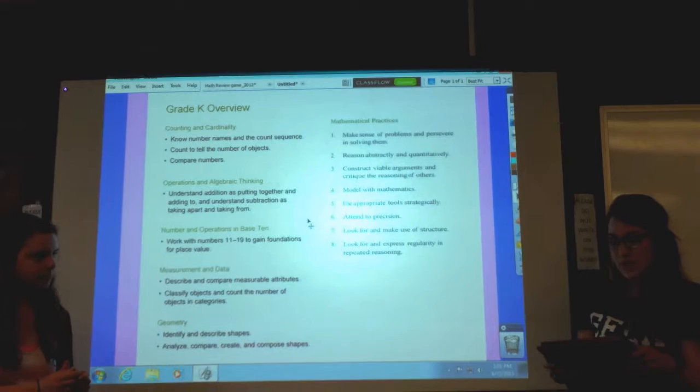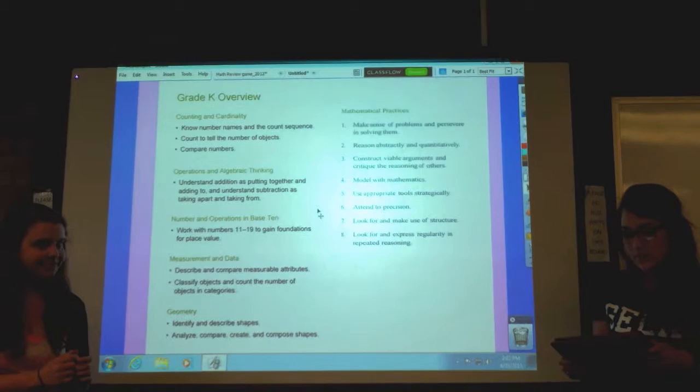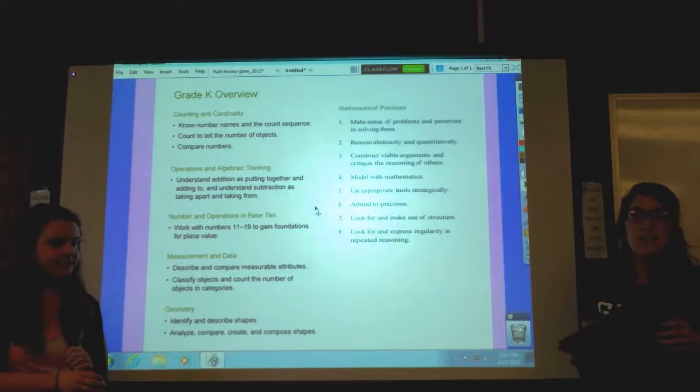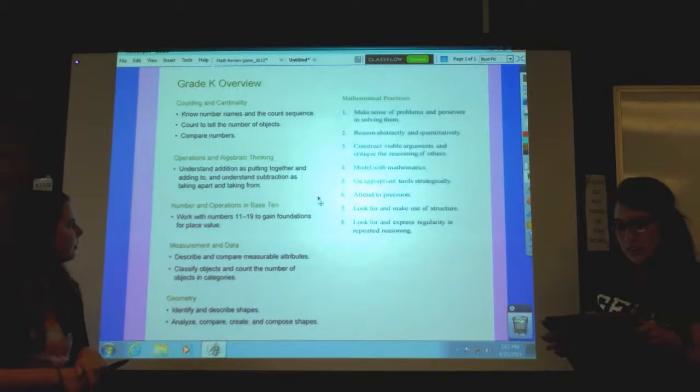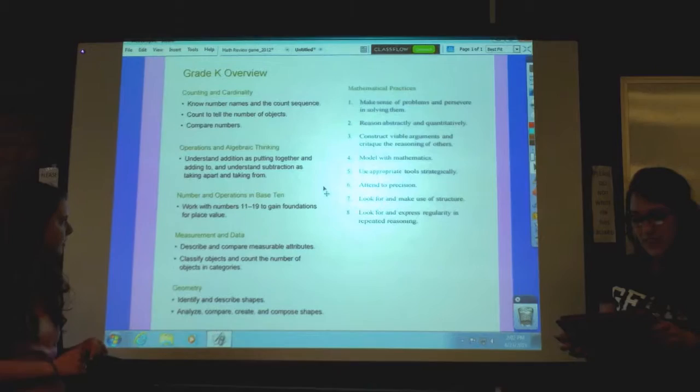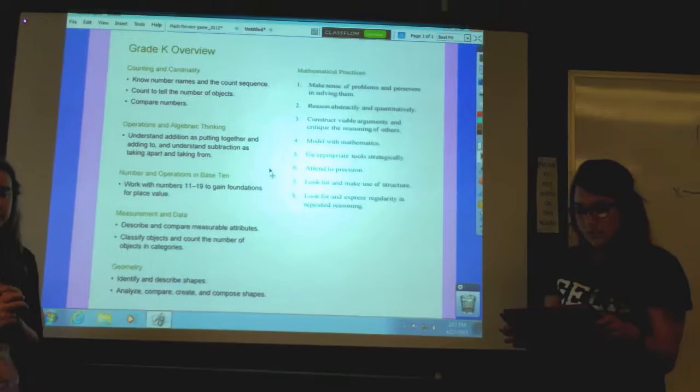There's also being able to describe and compare measurable attributes. There will be pictures of some things that are longer or shorter and so they can decide whether or not some things are longer or shorter. And then they're also expected to be able to correctly name shapes regardless of their orientations and overall size. They can analyze and compare two and three dimensional shapes in different sizes and orientations using informal language to describe their similarities, differences, and parts.